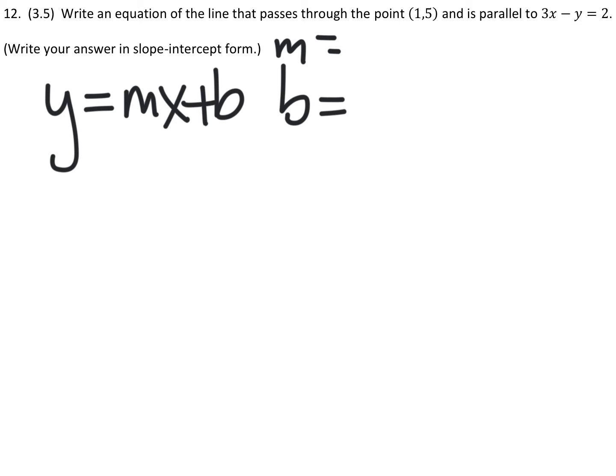There's not really any other information that it gives us other than a point that our new equation will go through. But since we know that we want an equation parallel to the existing equation 3x minus y equals 2, we want the same slope in this equation as our new equation.